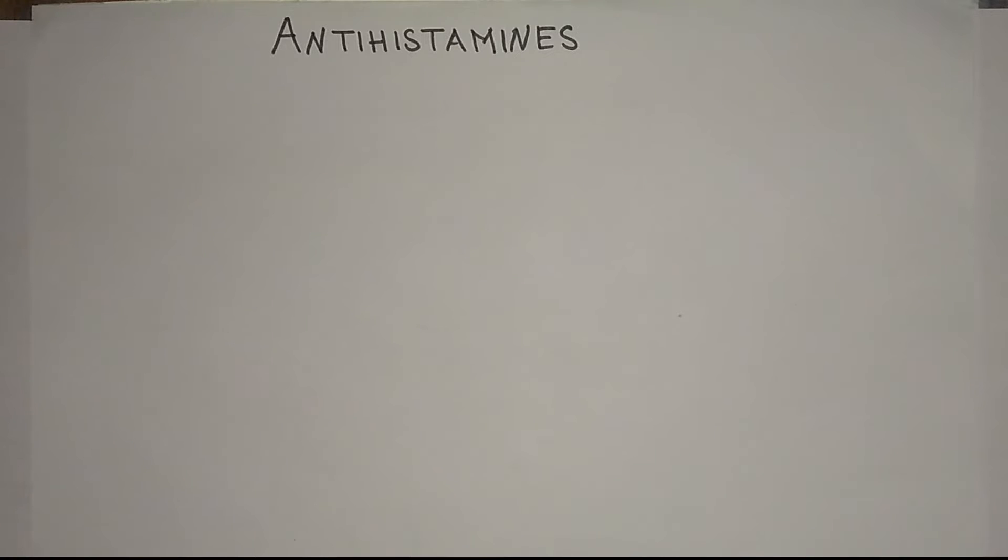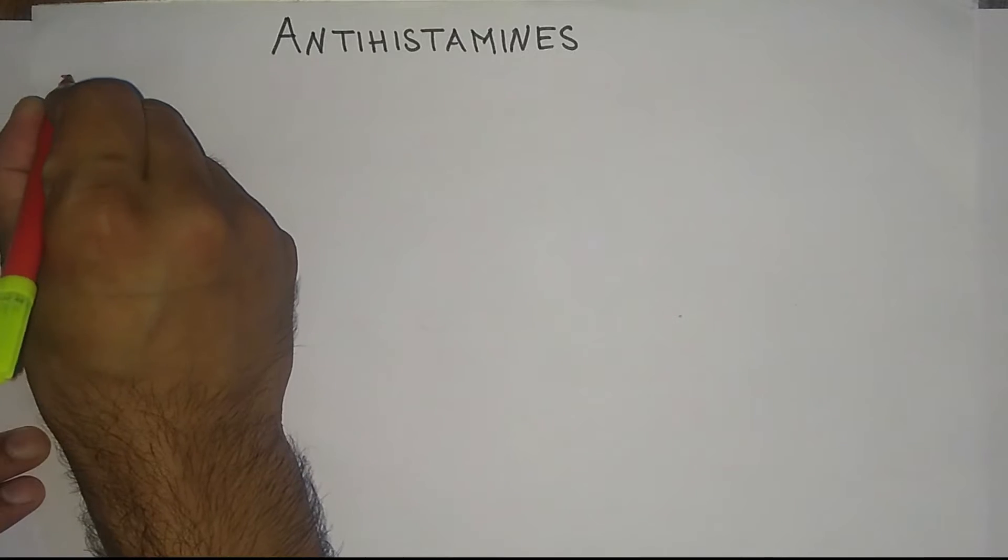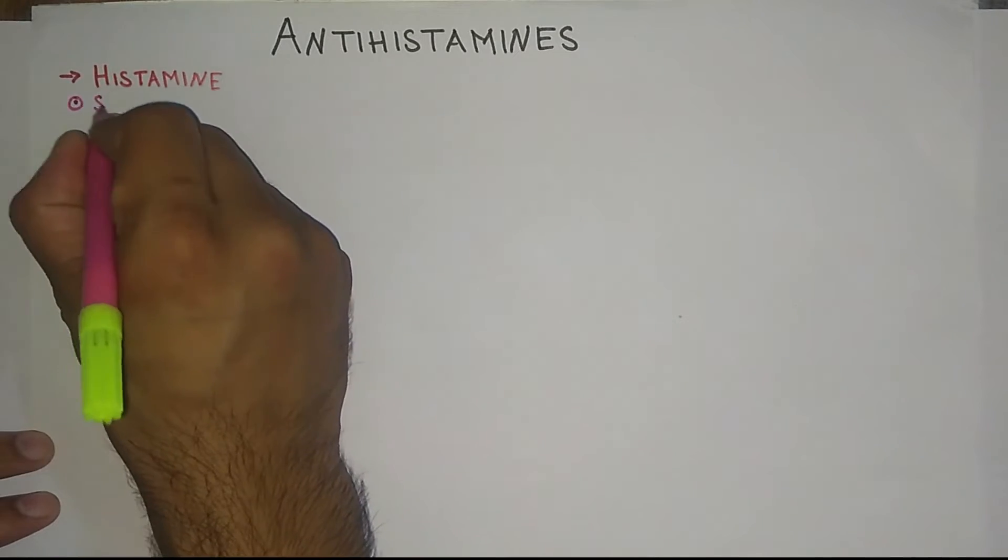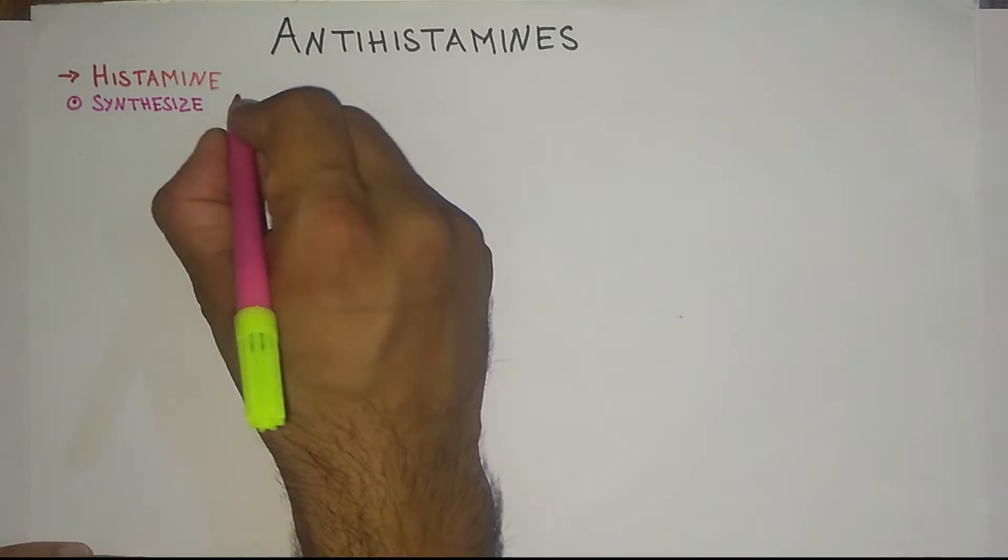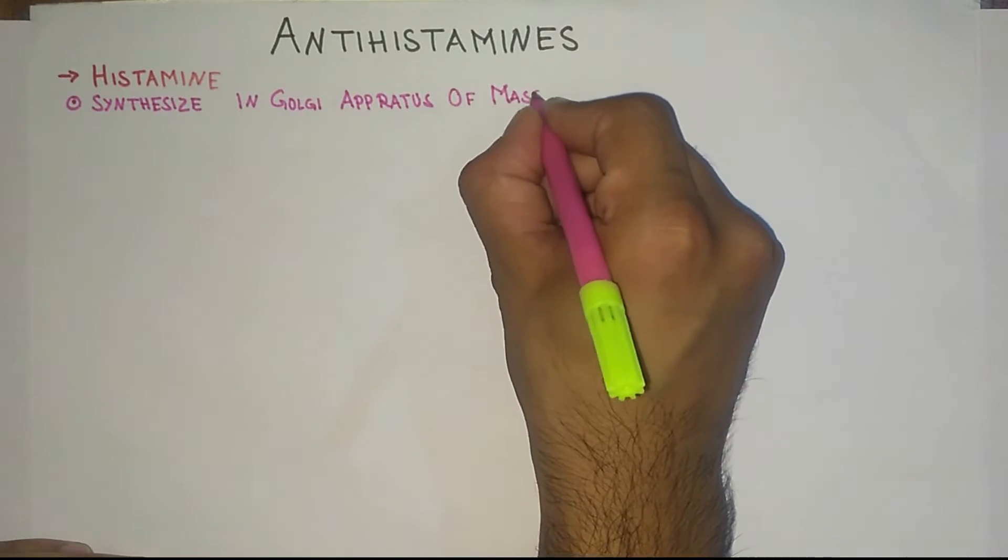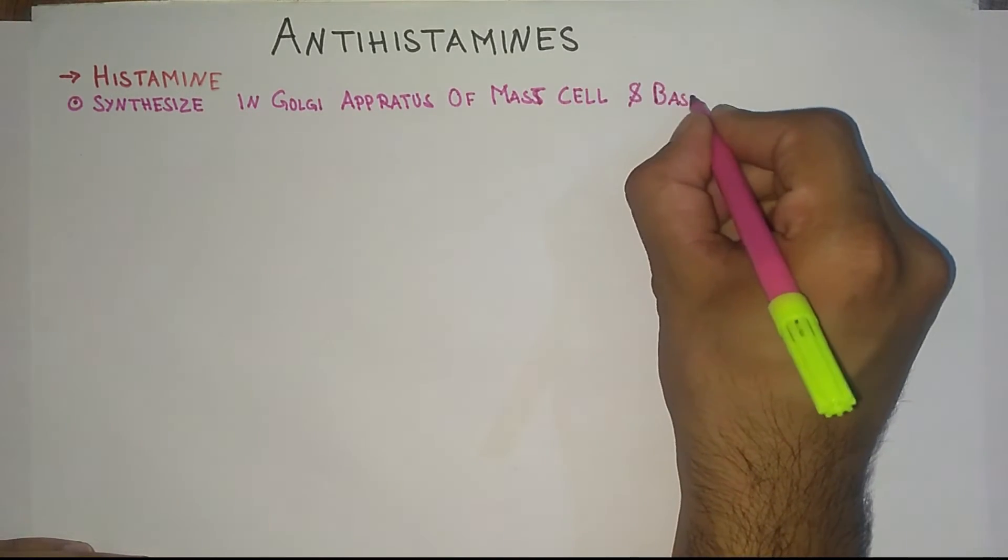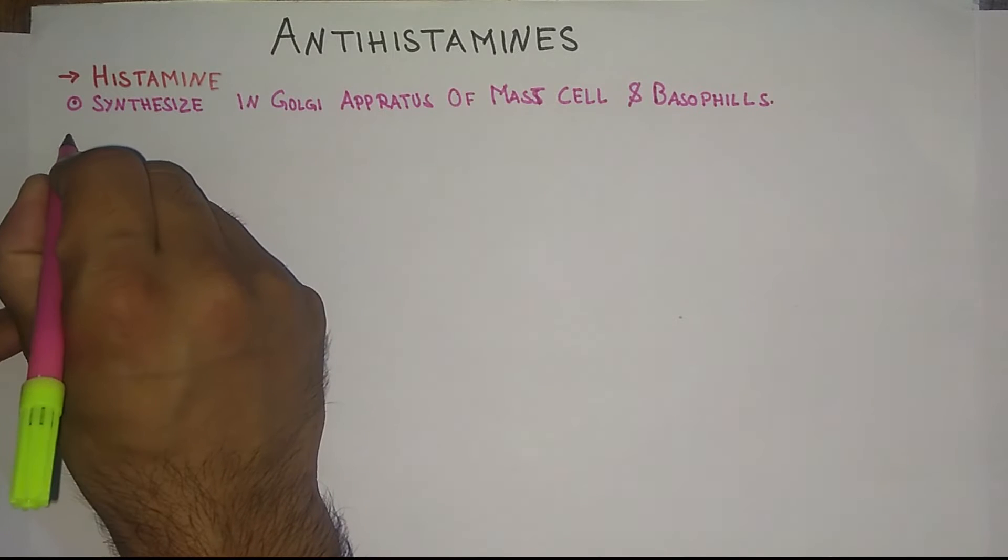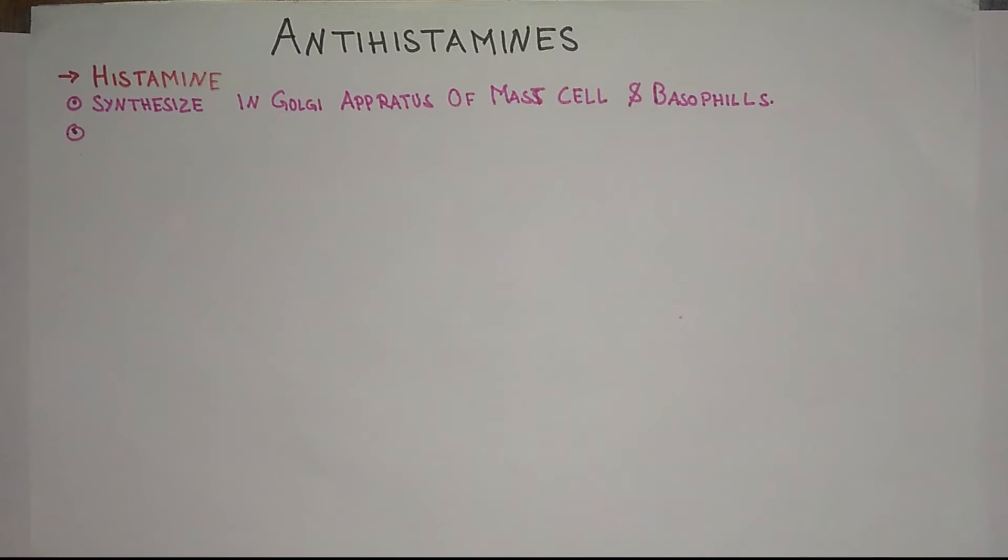Before going on to the direct mechanism of action, we just discuss some points about histamine. So actually what is histamine? Histamine is synthesized in our Golgi apparatus of mast cells and basophils. It is one of the mediators involved in allergic responses and plays an important role in regulation of the secretion of gastric acid.